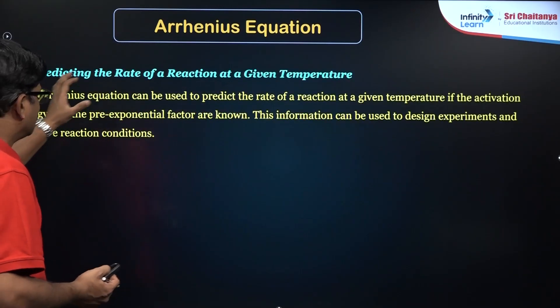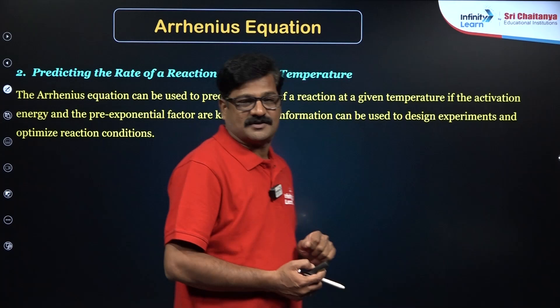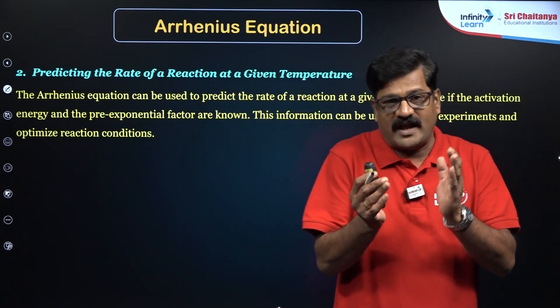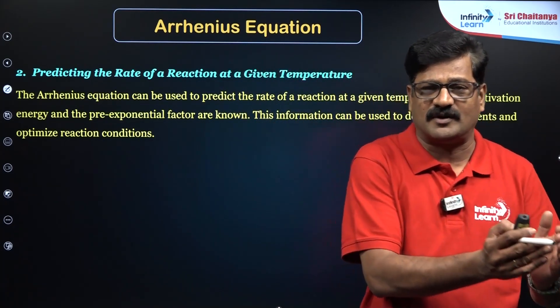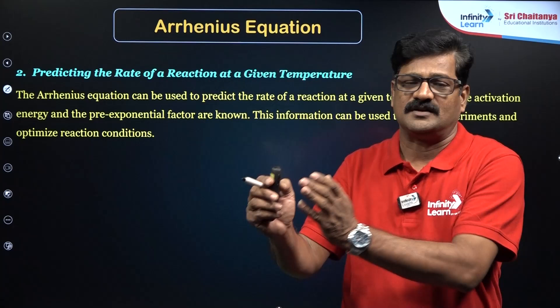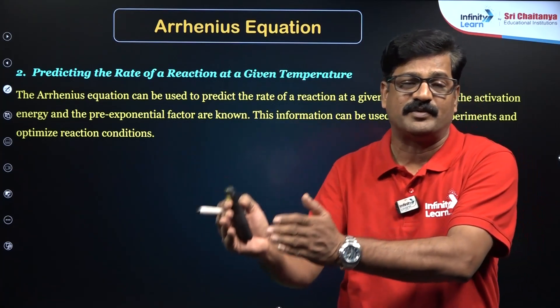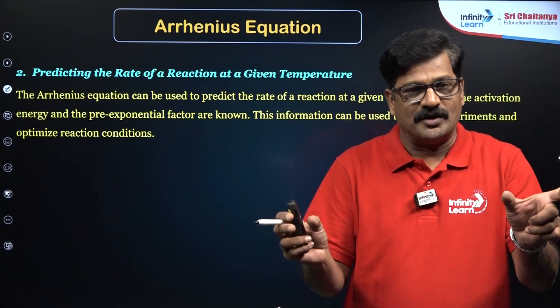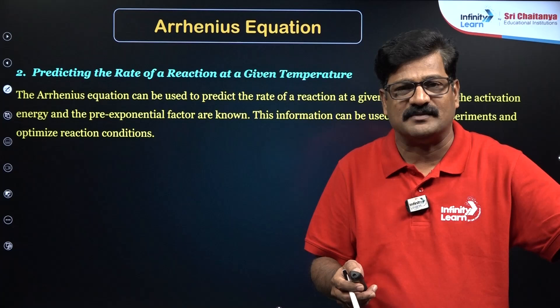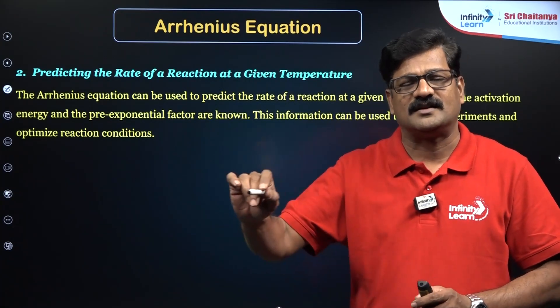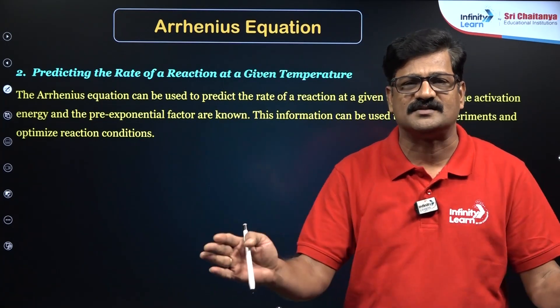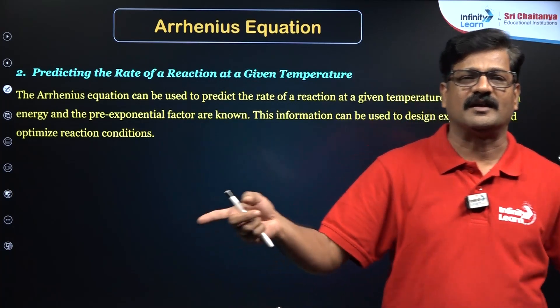And also predicting the rate of a reaction at a given temperature. So a reaction is conducted at temperature T1, another reaction is conducted, the same reaction is conducted at temperature T2. So let us calculate k1 at this temperature T1 and let us calculate k2 at temperature T2. By comparing T1 and T2 you can calculate k1 and k2.